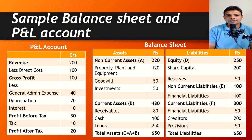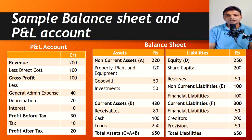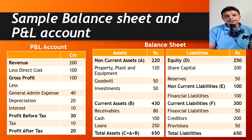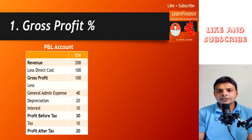Profit after tax in this example is 20 crores. The balance sheet has both assets and liabilities. On the liability side, we have equity share capital, accumulated reserves, non-current liabilities — payable after one year — and current liabilities, due within one year. On the asset side, we have non-current assets like plant and machinery, and current assets the company will realize within the next one year.